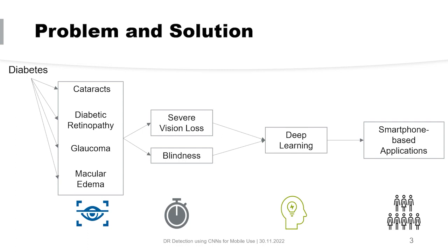Such as cataracts, diabetic retinopathy, glaucoma, and macular edema. If these are not detected in time, it can cause severe vision loss and even lead to blindness. We can use techniques like deep learning, specifically convolutional neural networks, to identify these diseases and classify them into their severities. Afterwards, we can apply these techniques to smartphone-based technologies to reach more people and enable automatic eye disease screening, providing more care in overcrowded regions as well.